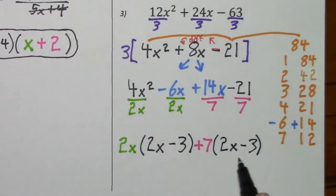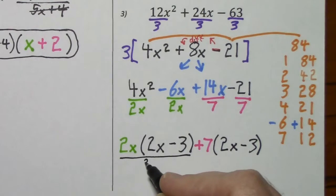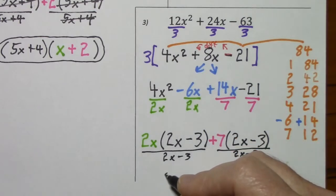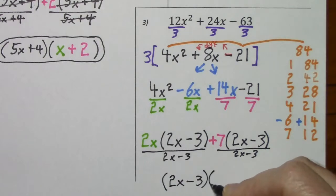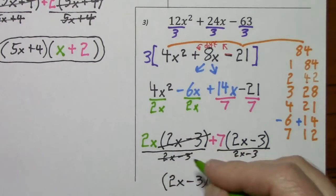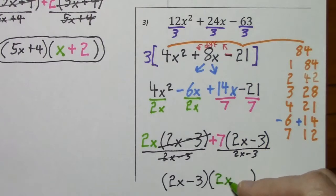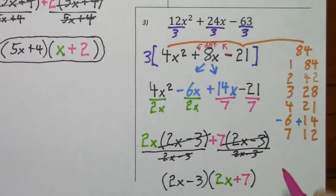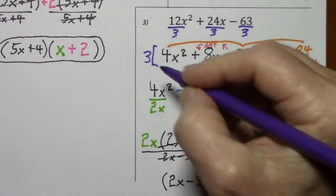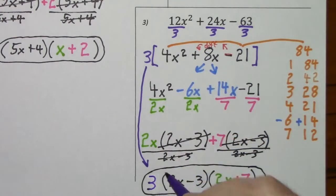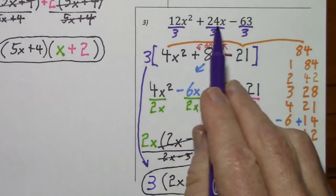Grouping together the next two terms, we can factor out a 7 from each term. This would give us 2x and negative 3. Again, what we have in parentheses is identical, so that's what we'll factor out — we'll put it in front of a set of parentheses. When we factor it out of here, we're left with 2x, and when we factor it out of here, we're left with positive 7. But this isn't the complete factored form — I have to remember to bring the 3 down and put it in front of these parentheses. So here's the factored form of our original polynomial.